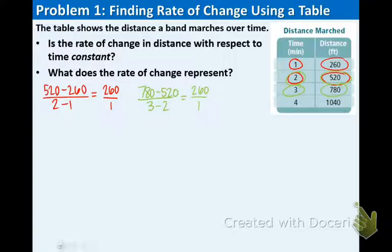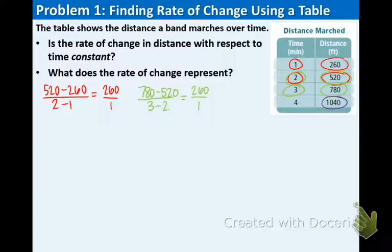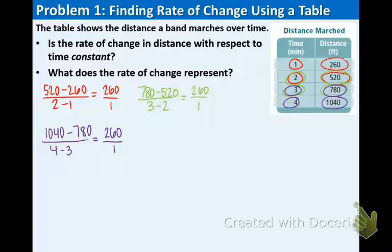Now let's do it one more time: 1040 minus 780 on top, and 4 minus 3 on the bottom. That also reduces to 260 over 1. So to answer the first question, yes, the rate of change is constant because the rate of change is 260 feet over 1 minute for all rows.